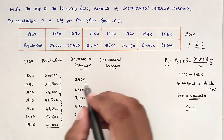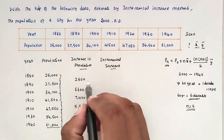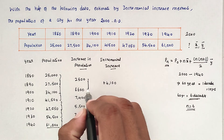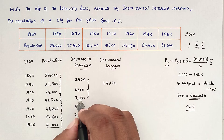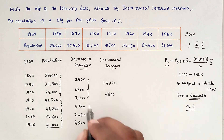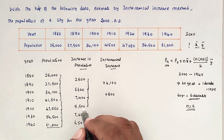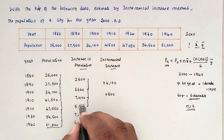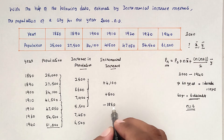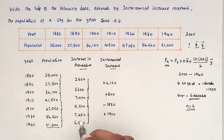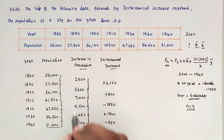Next, we calculate the incremental increase — the change between consecutive decade increases. The values are: +4,100; +800; −1,850; +1,900; −950. Some values are positive (increase) and some are negative (decrease), representing fluctuations in the rate of population growth.